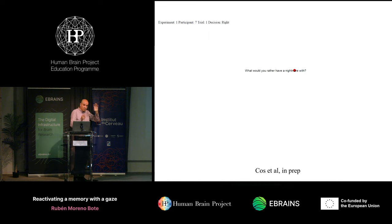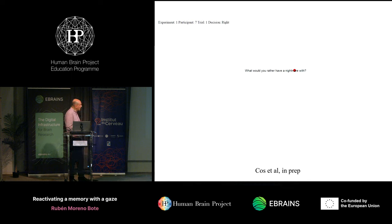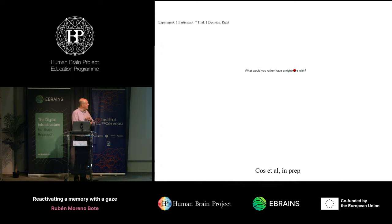So the question is what type of models will explain even more realistic, complicated scenarios. To address this question, we asked human participants to solve a complex decision-making task. There is first a context — like 'what would you rather have a nightmare with?' — an unexpected context you never thought about a priori. Then you're shown two alternatives and you have to choose one of them.